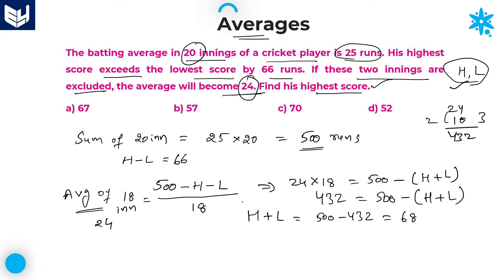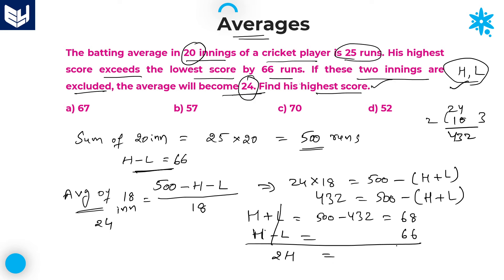We have H plus L equals 68, and H minus L equals 66. Adding these two equations: 2H equals 134, therefore H equals 67. The highest score is 67. Option A is the right answer for this question.